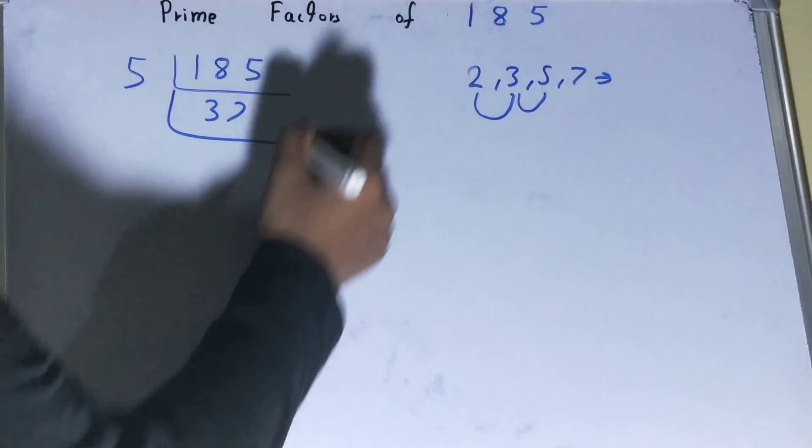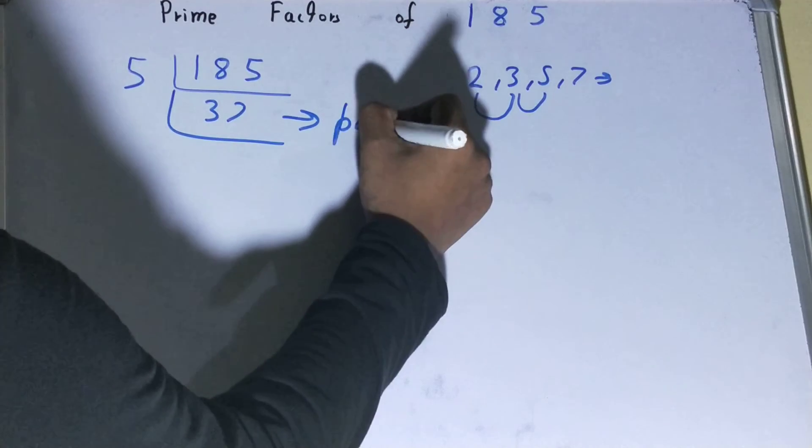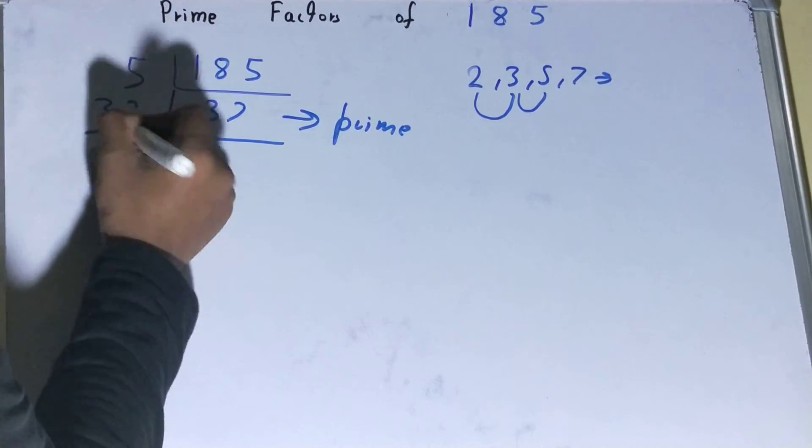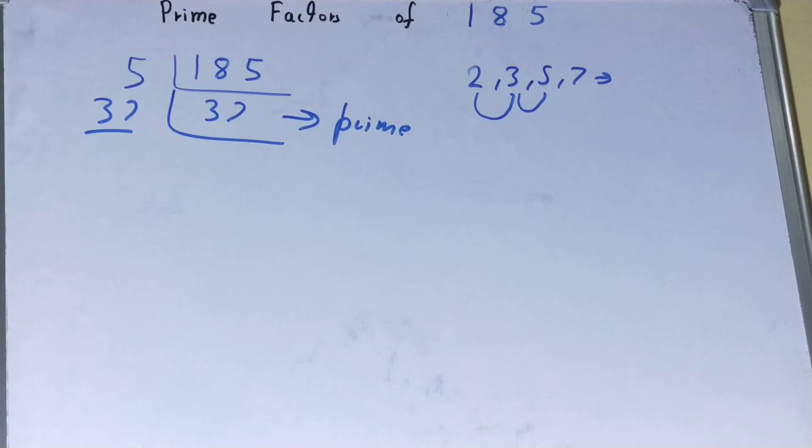not divisible by 5 and not with any other prime number, because 37 is prime itself. So to divide it, you need 37 on the left-hand side also. Once you do so, you'll get the